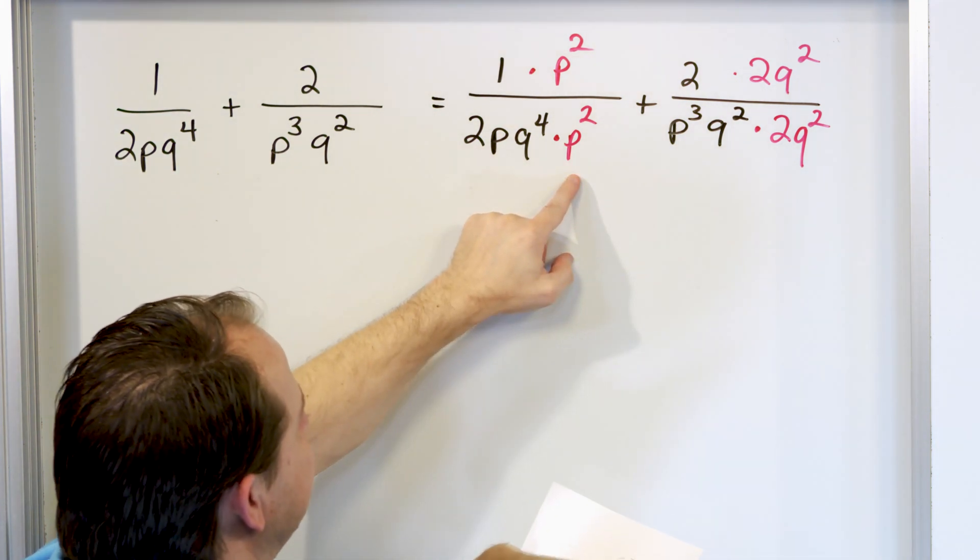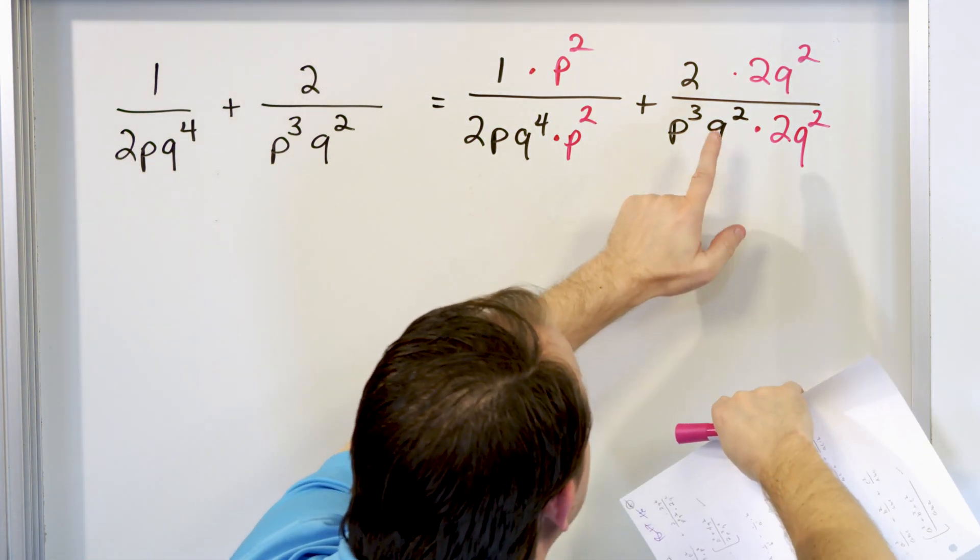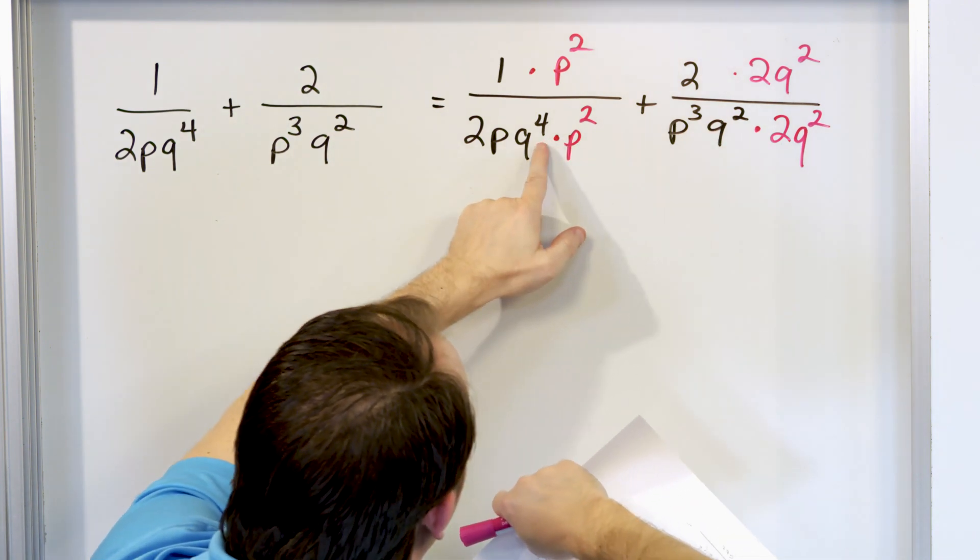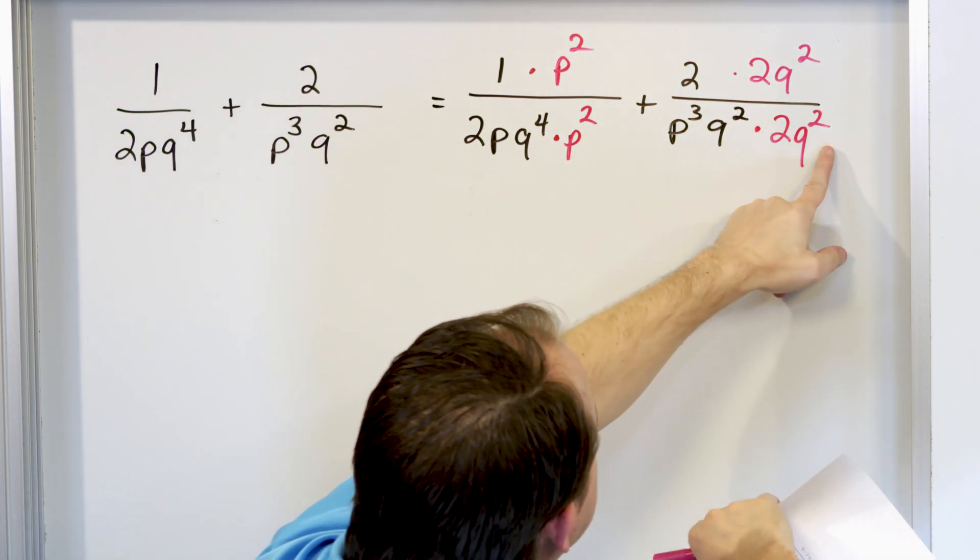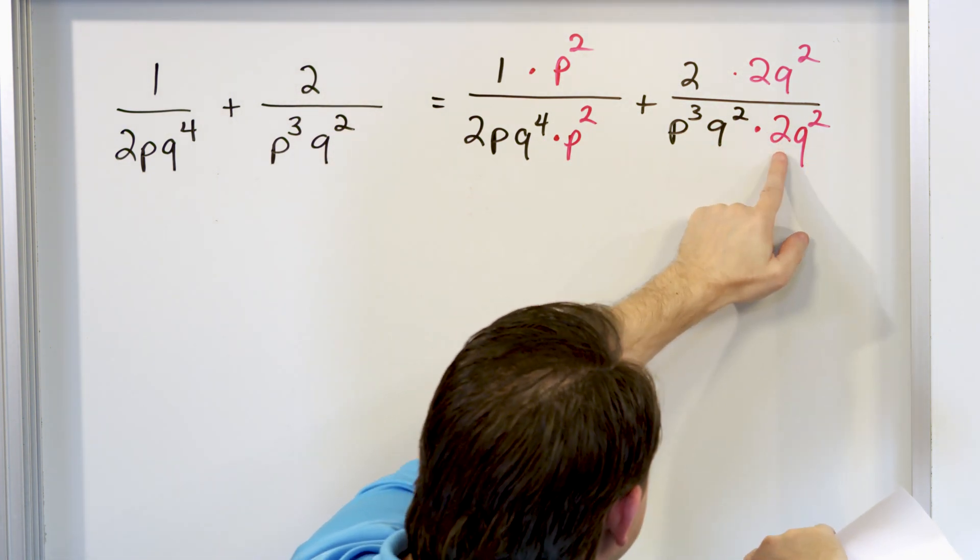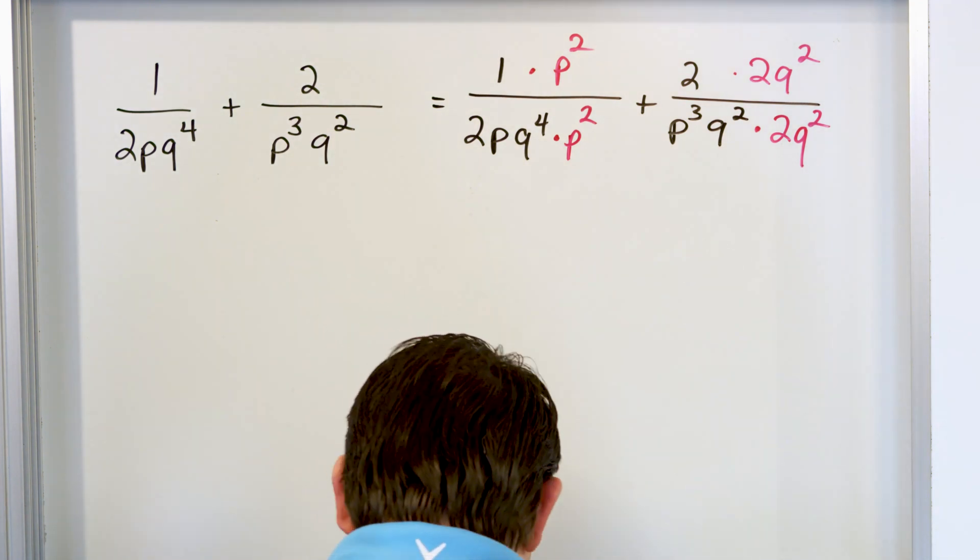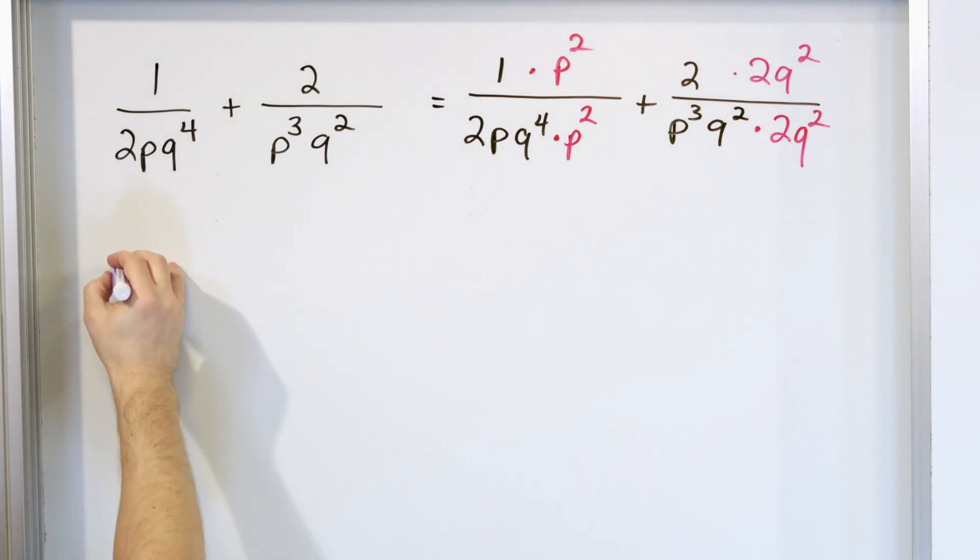Then I go over here and say, well, I only had two q's here and I have four here. So I'm going to multiply this by two more q's and again by the number two, so that at the end of the day, what I'm going to have is for the numerator here, p squared.